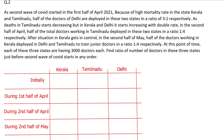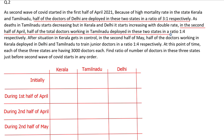The question says that the second wave of COVID started in the first half of April 2021. Because of high mortality rate in the states of Kerala and Tamil Nadu, half of the doctors of Delhi were deployed in these two states in a ratio of 3:1. As deaths in Tamil Nadu start decreasing but in Kerala and Delhi it starts increasing with double rate, in the second half of April, half of the doctors working in Tamil Nadu are deployed in these two states in a ratio of 1:4 respectively.